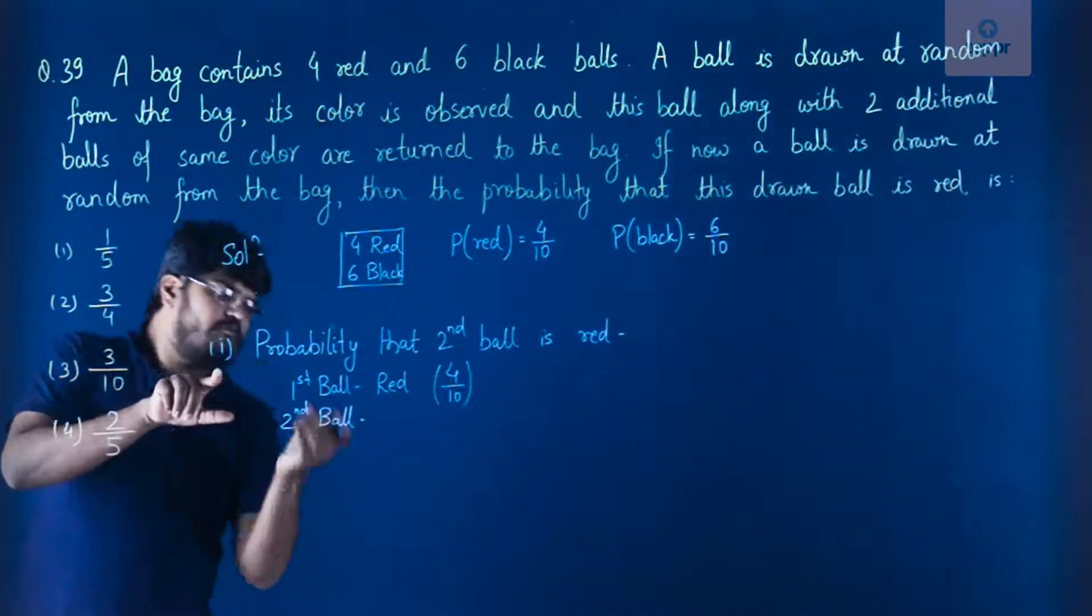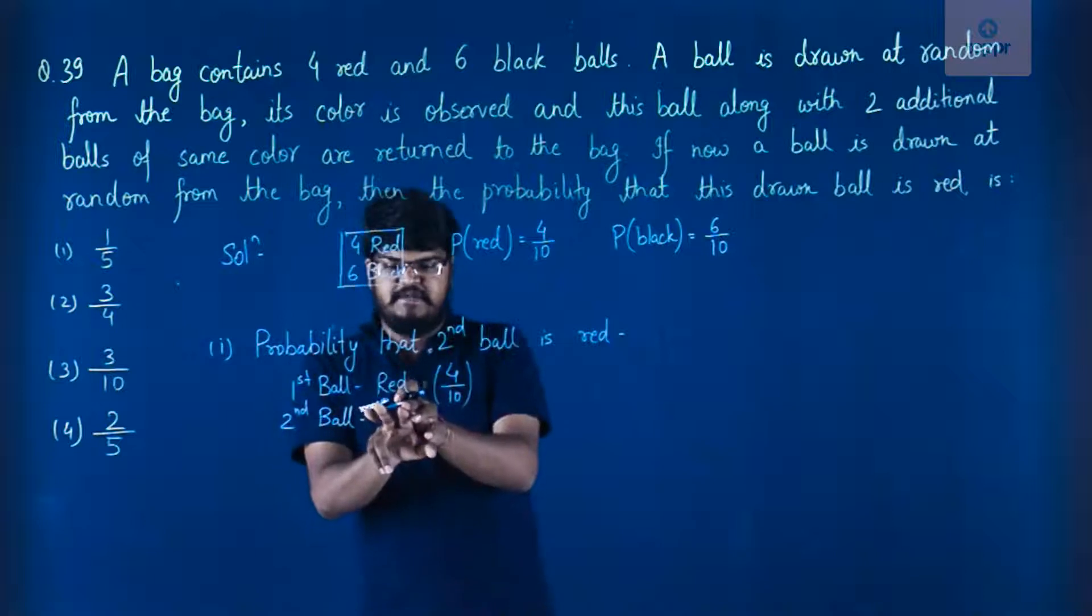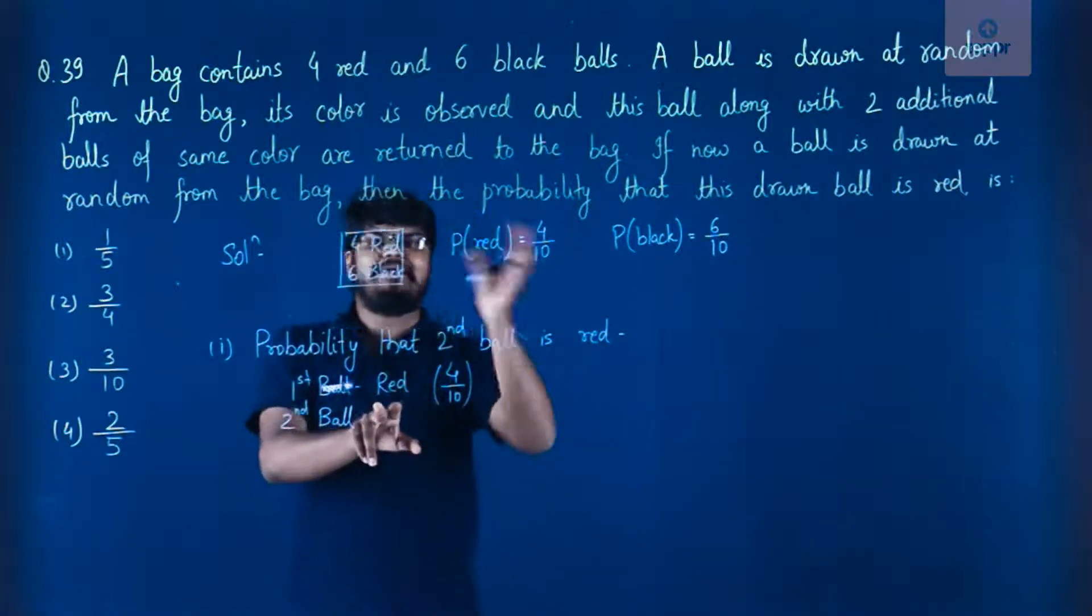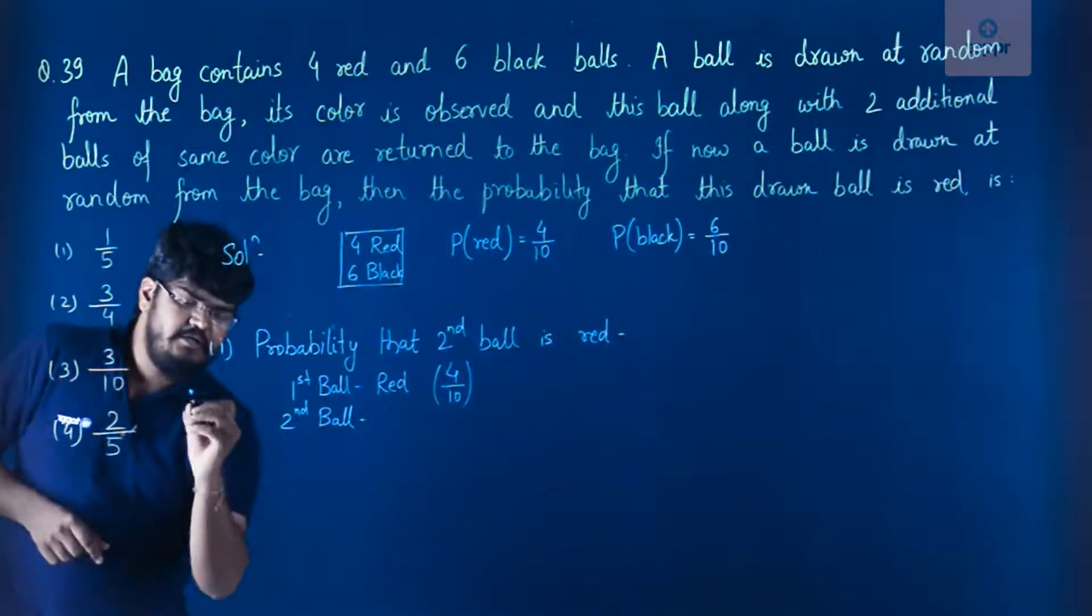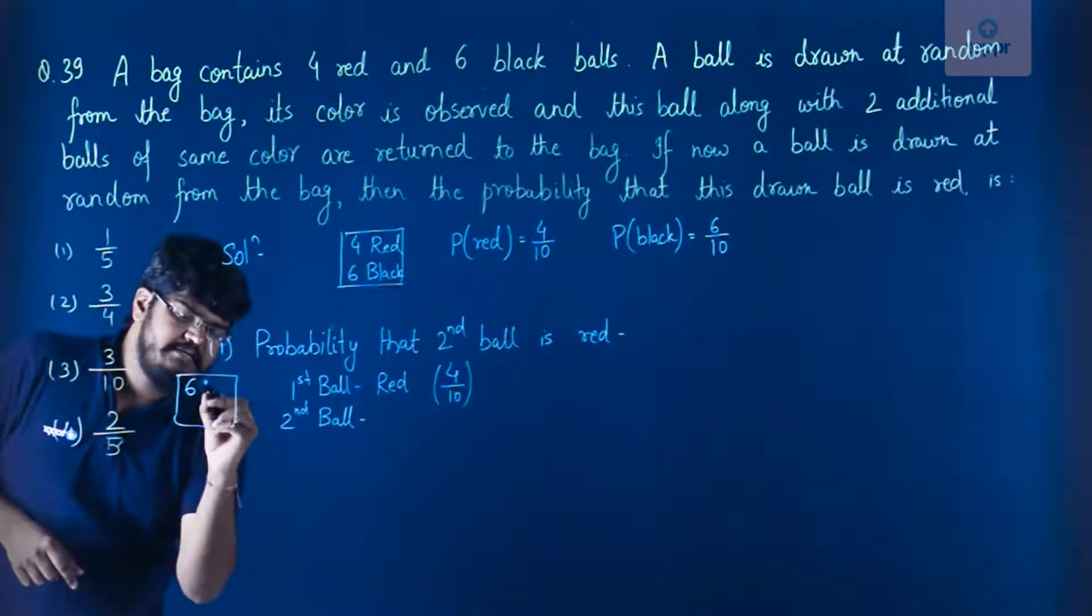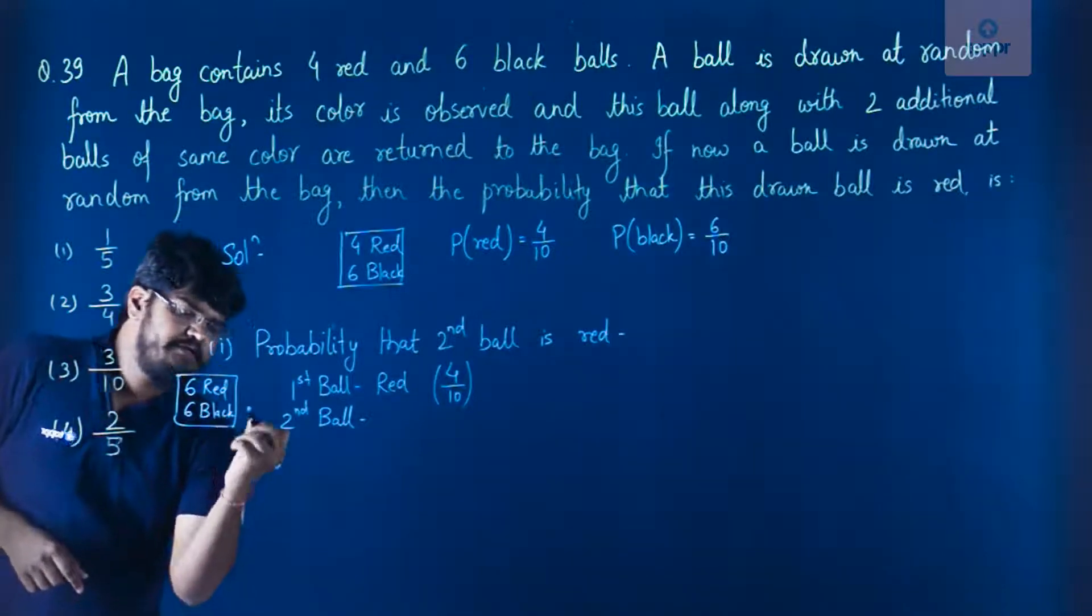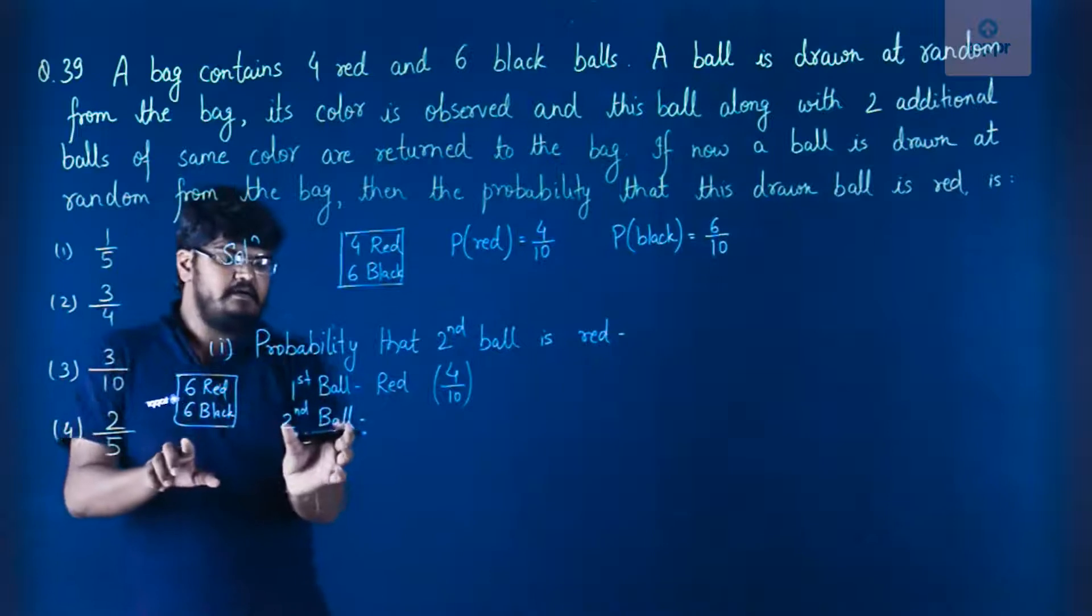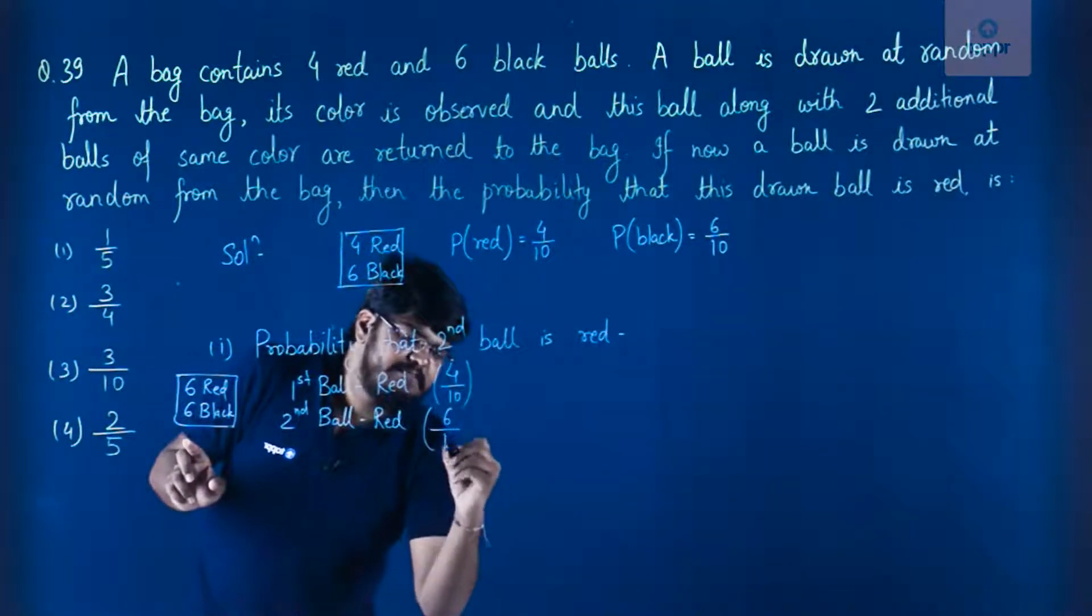Here we will have to think a little. So since the red ball has been drawn the first time, we will add two more red balls in this bag which will make the bag contain 6 red and 6 black, right? So now the probability of drawing the ball red second time will become 6 by 12.